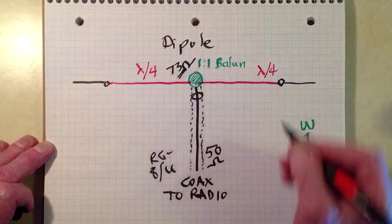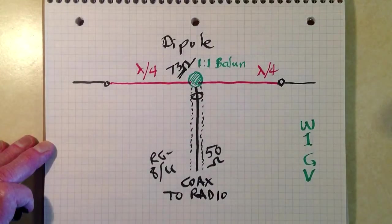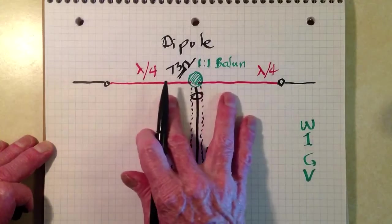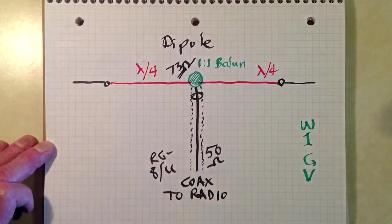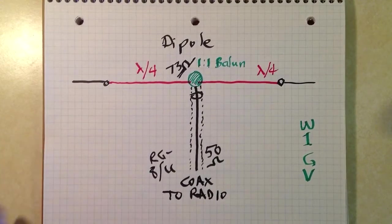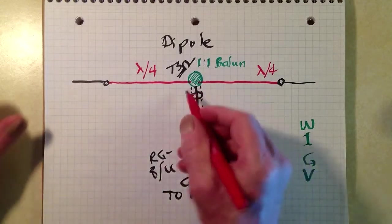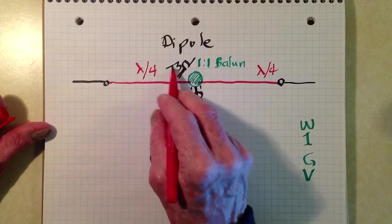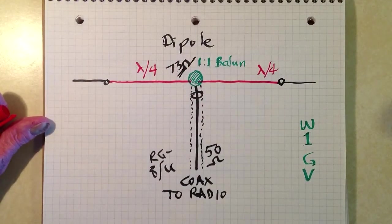In fact in free space exactly 73 ohms. Well, you can droop the elements of a dipole just the way that you can droop the radials of a ground plane antenna. And the more you droop them, the lower this feed point impedance will become.